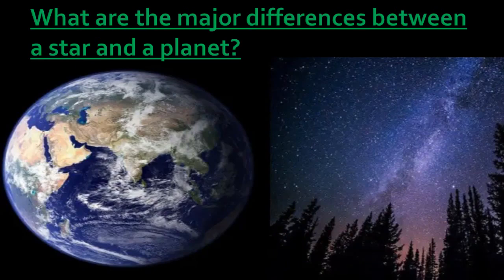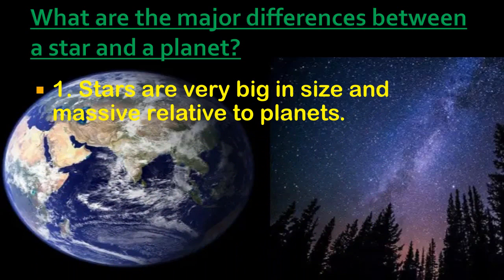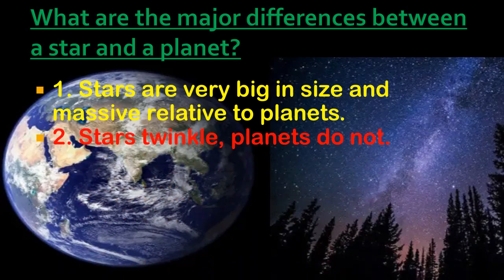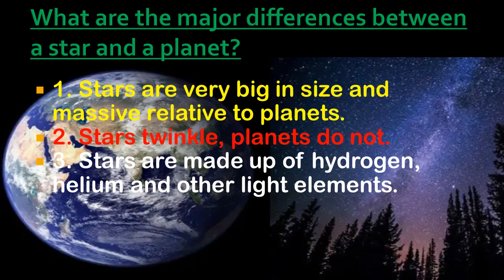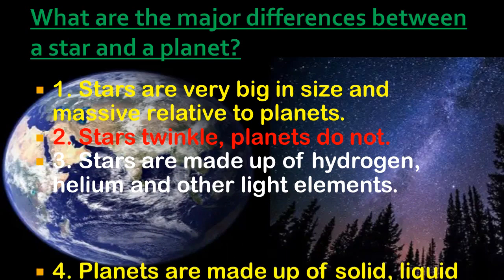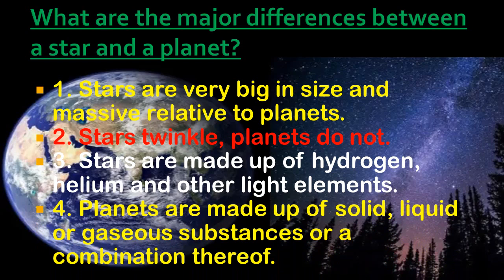What are the major differences between a star and a planet? Stars are very big in size and massive relative to planets. Stars twinkle but planets do not. Stars are made up of hydrogen, helium, and other light elements, whereas planets are made up of solid, liquid, or gaseous substances, or a combination thereof.